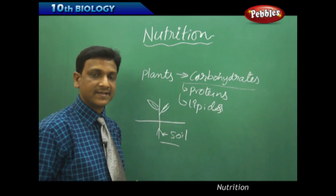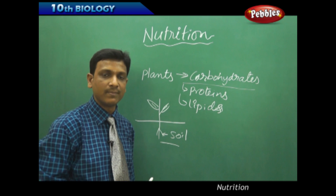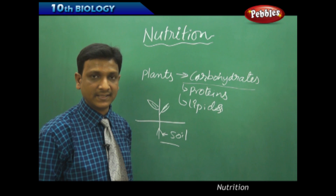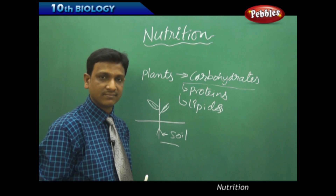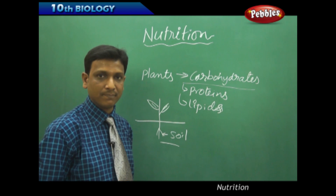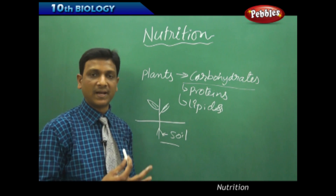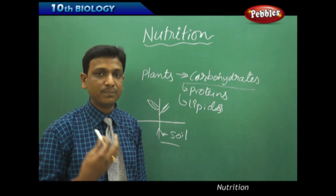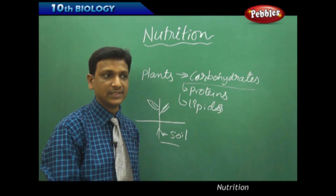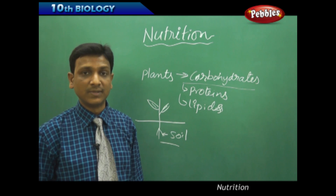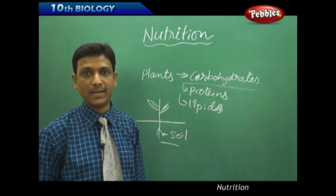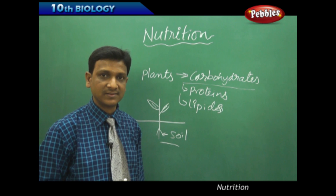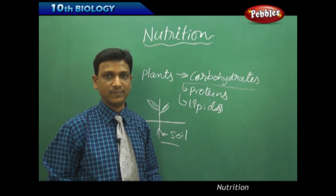Apart from the soil, the plant requires some other materials. This was proven by experiments conducted by Van Helmont. He showed that plants need something else besides the soil. At that time, it was not known that plants require carbon dioxide, sunlight, and other things. People used to believe soil was the sole source of materials for plant growth and food production, but Van Helmont disproved this, showing that other materials are used by plants to prepare food.